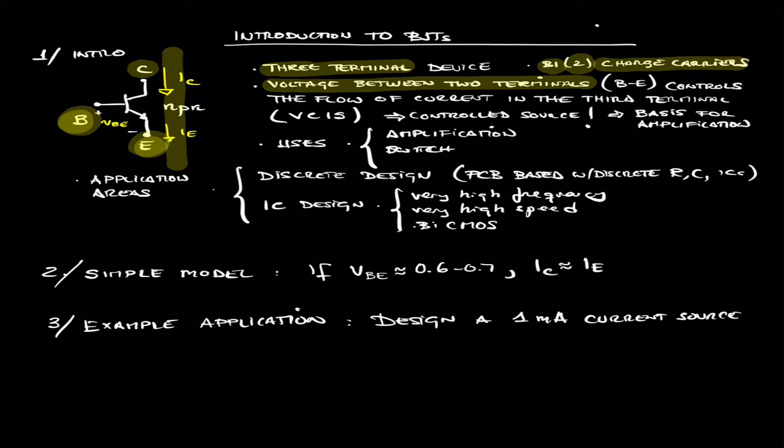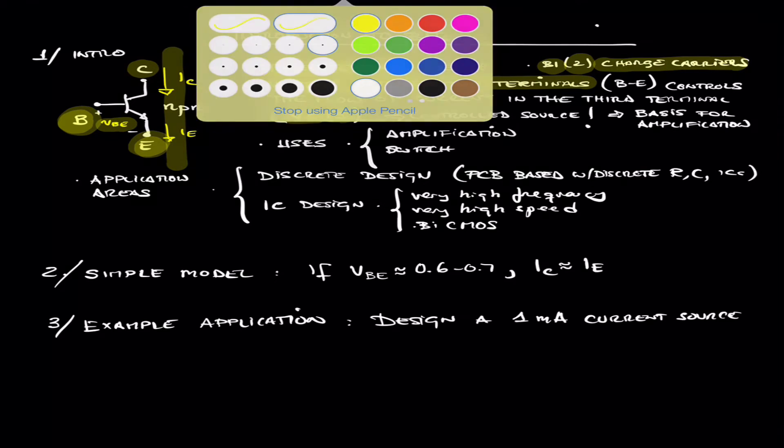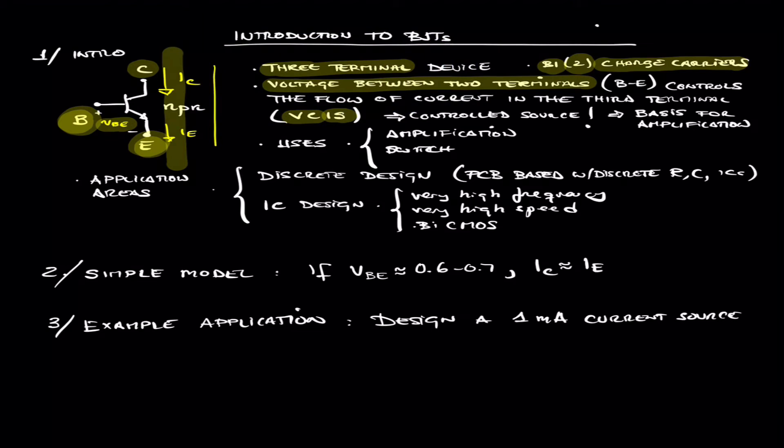So effectively, what we are doing is we have a voltage controlled current source. If you bias the transistor right, if you have enough base emitter voltage, you have current flow through the other terminals.